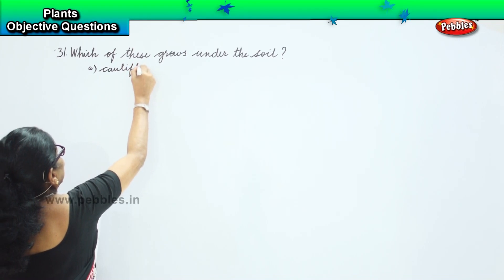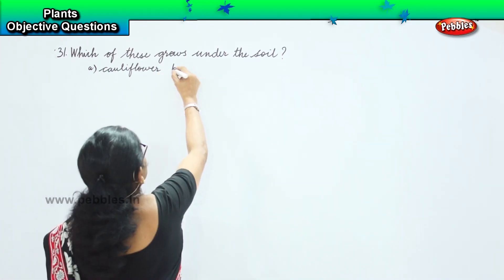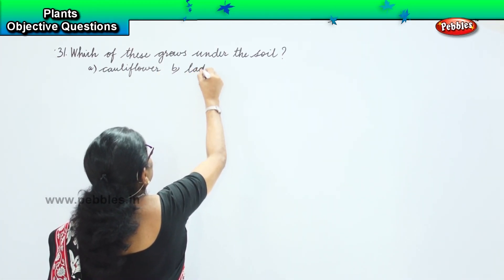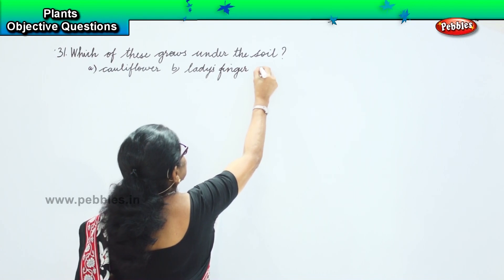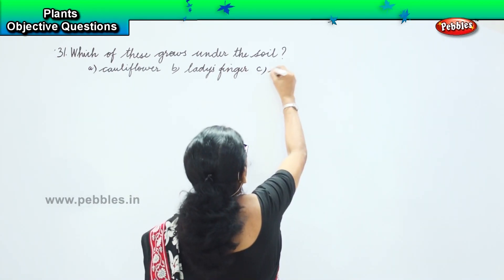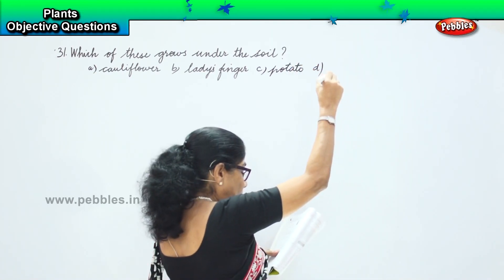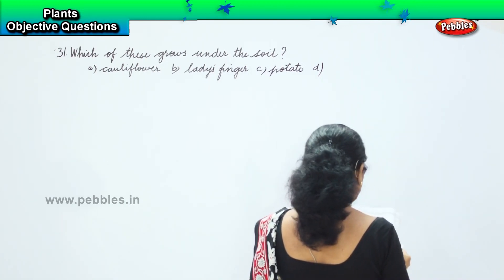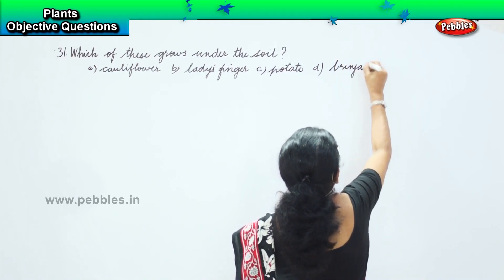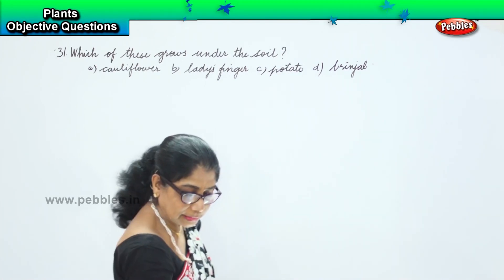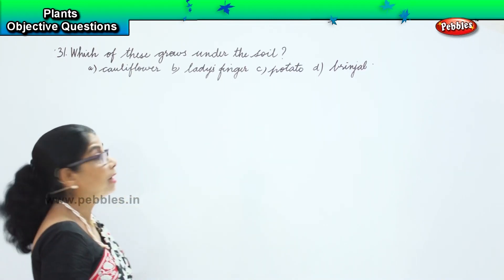Option A: cauliflower. Option B: lady's finger. Option C: potato. And option D: brinjal. Now, which of these grows under the soil? Cauliflower? No. Lady's finger? No. Brinjal? No.